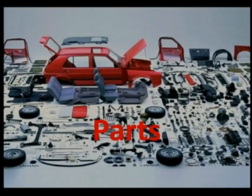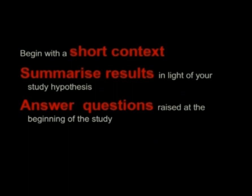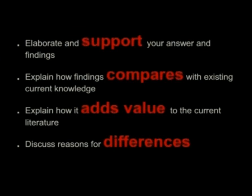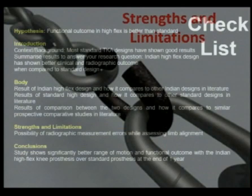Discussion, you need to divide them into parts. Introduction, body, strength and limitation and conclusion. It has to be short and concise. The first paragraph, summarize your result. Answer the question that were raised in the introduction. This is the body of it. You need to support your findings, compare with context of literature, explain how your study will add value and discuss the reason for differences. Strength and limitation has to be mentioned in your discussion as a separate paragraph. This is a checklist where you can, I'll give this presentation if you want so you can follow this checklist.